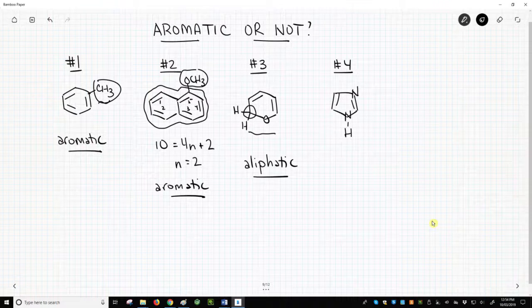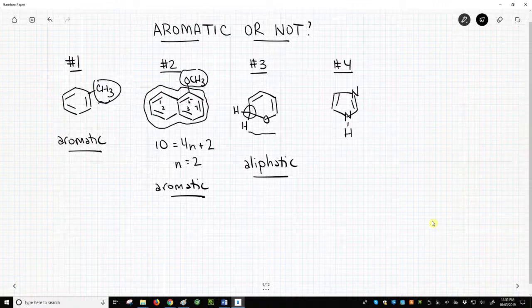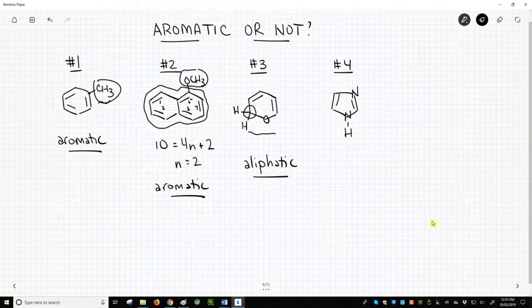Example 4 – imidazole. We have a ring, and it can be flat. Can each atom in the ring be sp2 hybridized to give each a p orbital? The carbons are fine with sp2. The nitrogen in the upper right is fine as sp2. It is on a double bond. It is the bottom nitrogen that is a question.